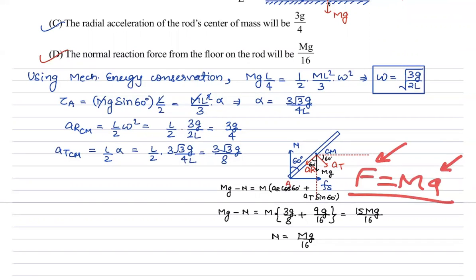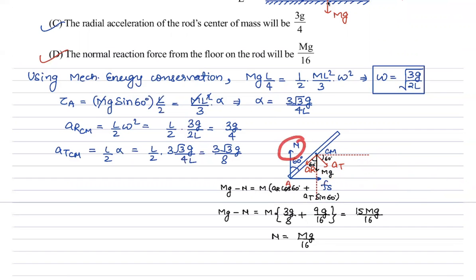Normally we write equations along the radial line and perpendicular to the radial line, but since we needed to find the normal force, I wrote the total acceleration of the center of mass in the vertical direction. Using F = ma in any particular direction — force and acceleration must both be in that direction. Here we took components of both a_r and a_t in the vertical direction.